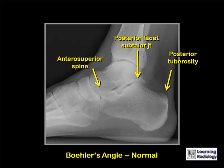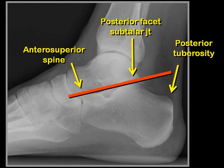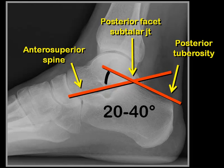These are the landmarks on the superior aspect of the calcaneus which enable us to measure Böhler's angle, an important angle in determining the degree of depression of the calcaneus. A line is drawn from the anterosuperior spine of the calcaneus to the posterior facet of the subtalar joint, which is the highest point of the calcaneus. A second line is drawn from the posterior facet of the subtalar joint to the posterior tuberosity of the calcaneus, on which the Achilles tendon inserts. The angle between these two lines is measured — in normal people it measures between 20 and 40 degrees.